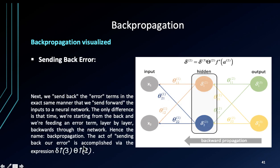We send back the error terms in the exact same manner that we sent forward. With backpropagation, we are going to send back the error terms the way we went forward. The only difference is that this time we are starting from the back and we are feeding an error term back layer by layer backwards through the network. That's backpropagation, which is the act of sending back our error.